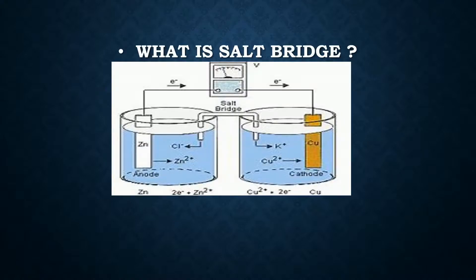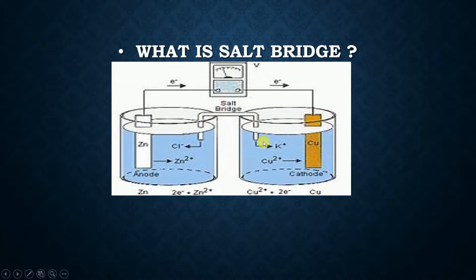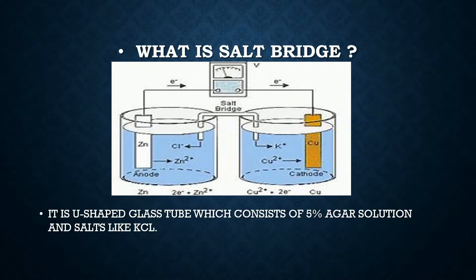Now, what is exactly a salt bridge? We have taken here a galvanic cell in which there is a Zn electrode inserted in a ZnSO4 solution, and a copper electrode inserted in a copper sulphate solution. We insert a salt bridge between them. This salt bridge is nothing but a U-shaped tube which consists of a 5% agar solution and salts like KCl. Agar solution is a plant gel, and this plant gel is mixed with solutions like KCl or salts like NaCl.